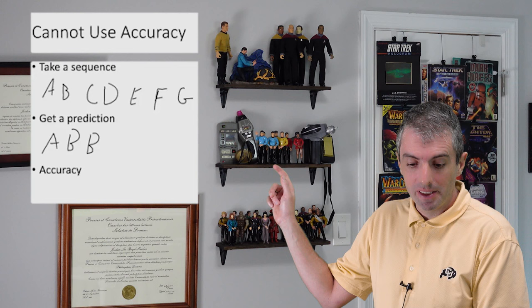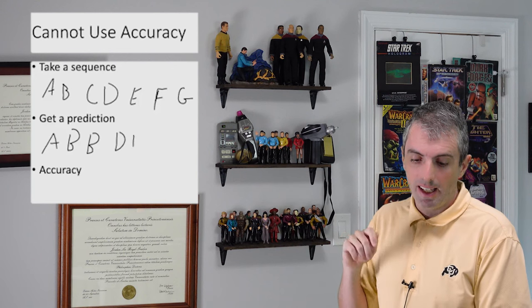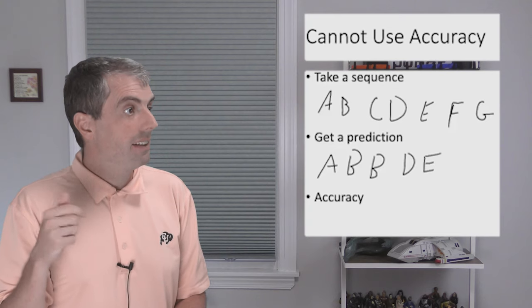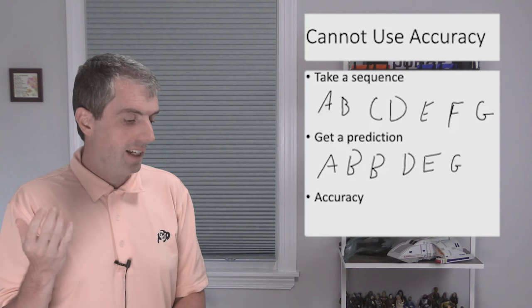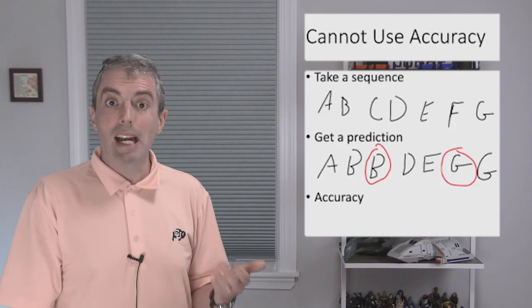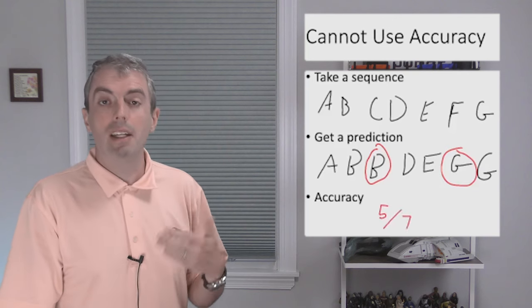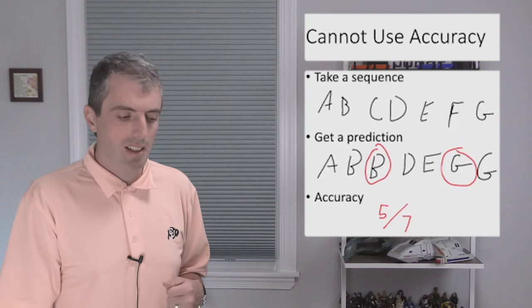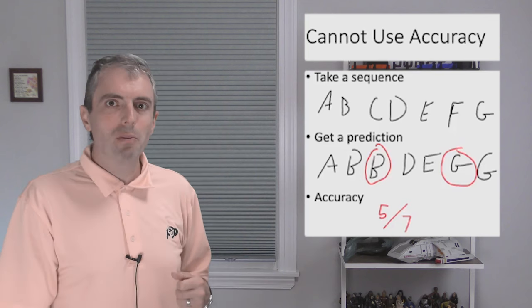So here it makes a mistake, and it keeps going, and it makes another mistake here at the end. So the accuracy is 5 over 7. It only made 2 mistakes. So why doesn't this work?